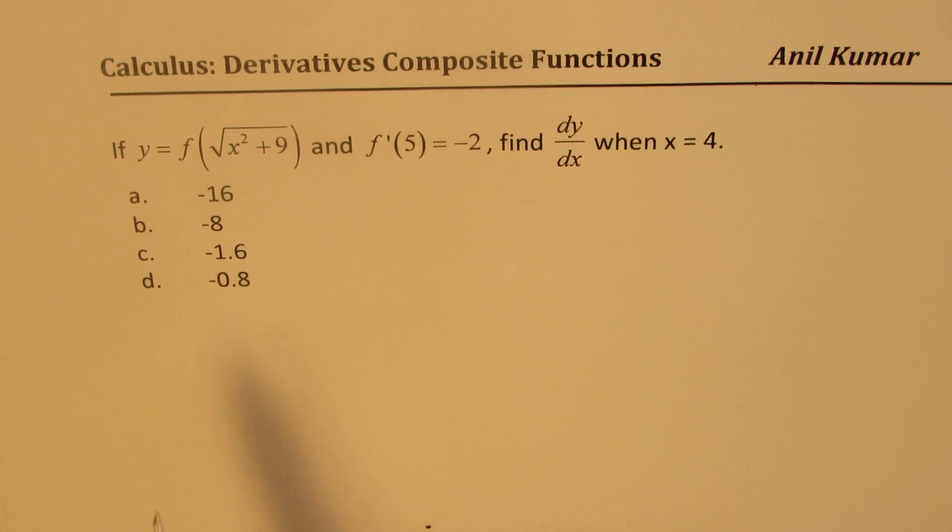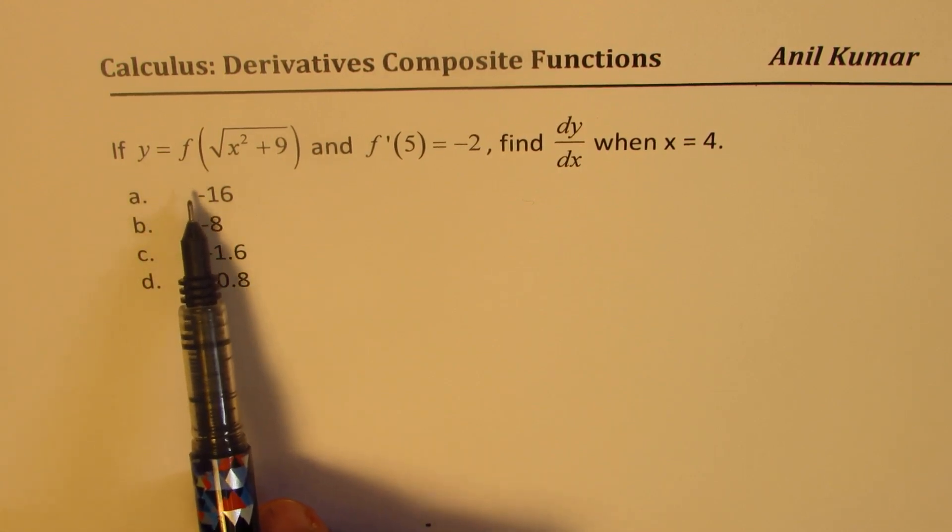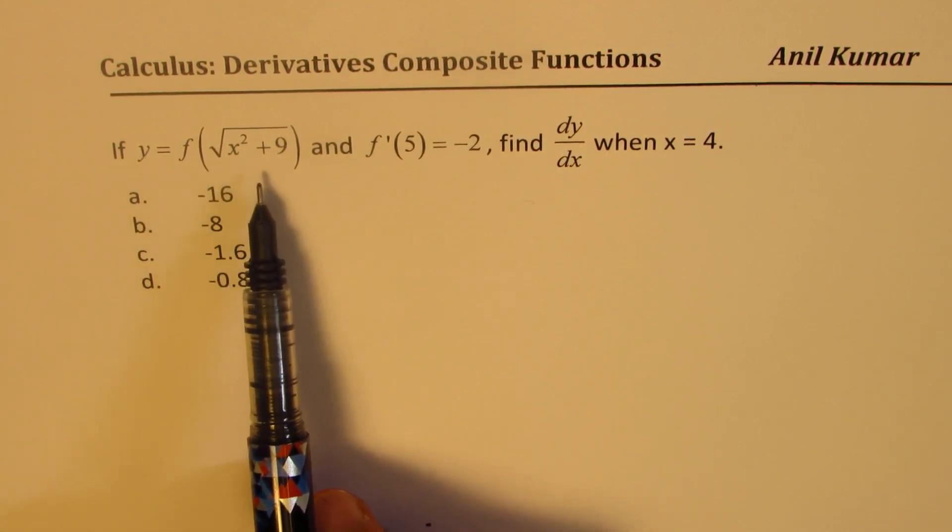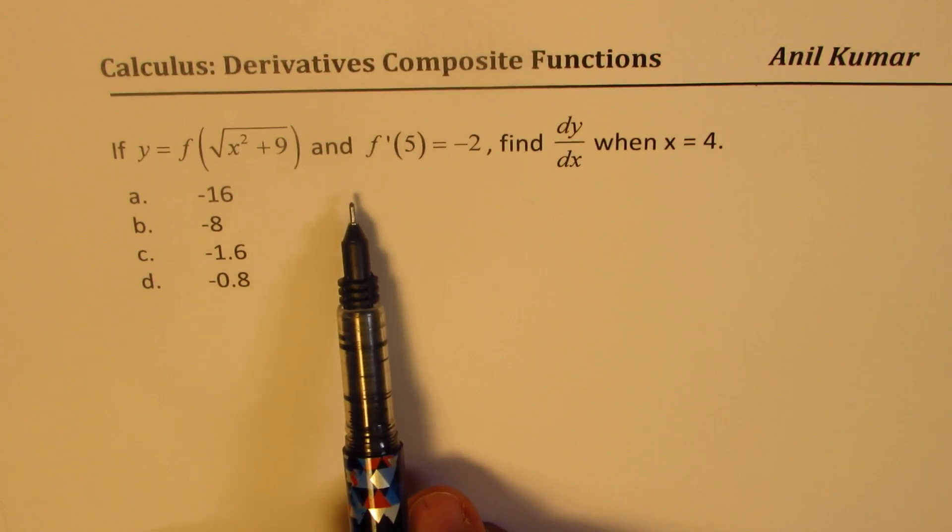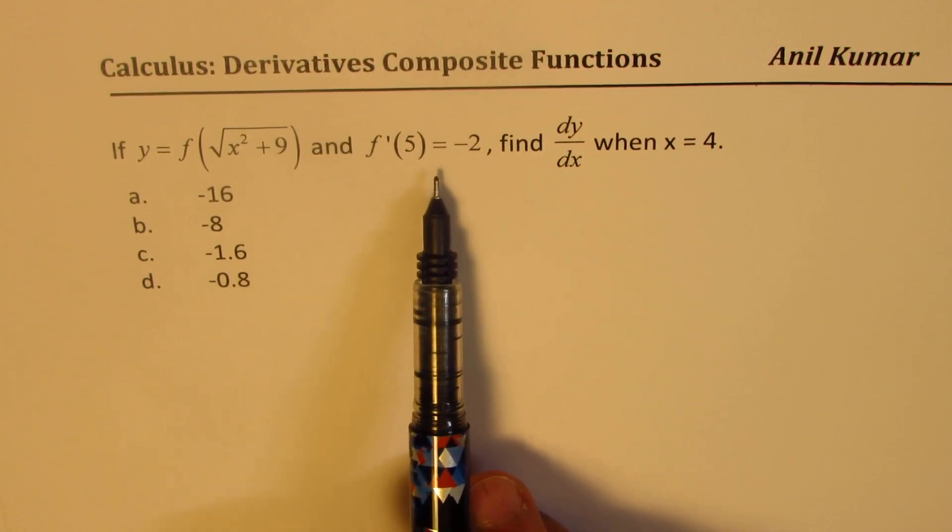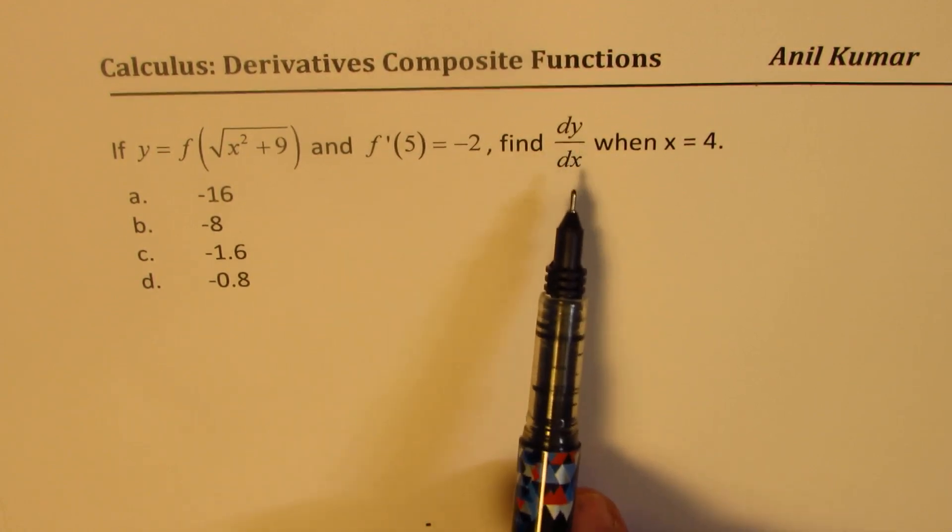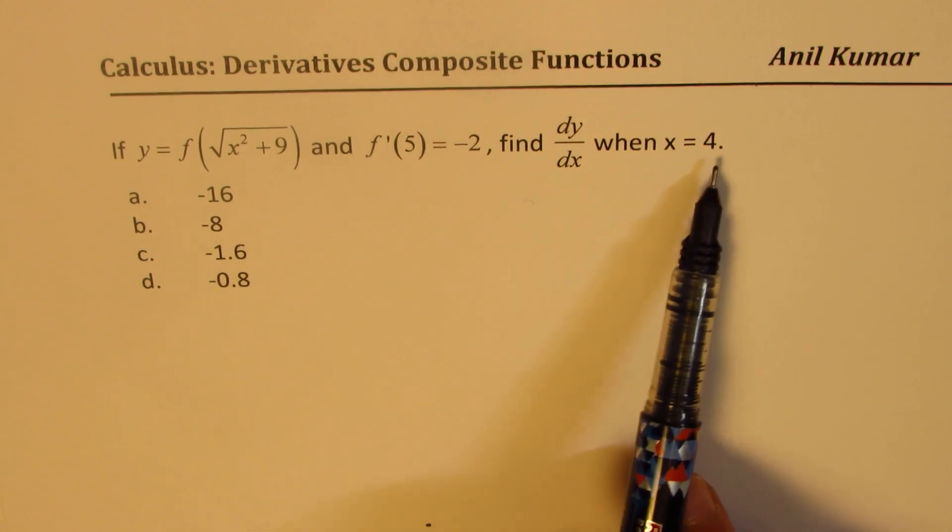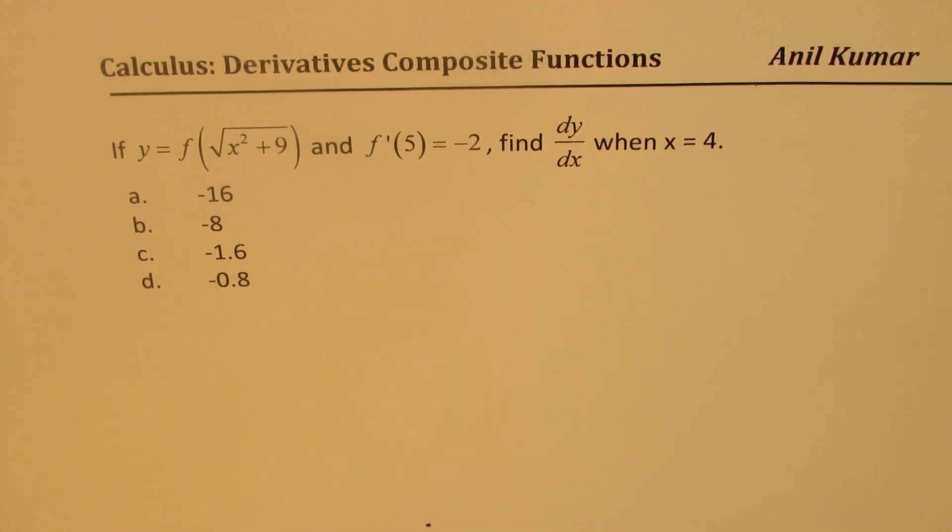The question here is, if y equals f of square root of x squared plus 9 and f dash 5 equals minus 2, find dy dx when x equals 4. Four choices are given to you.